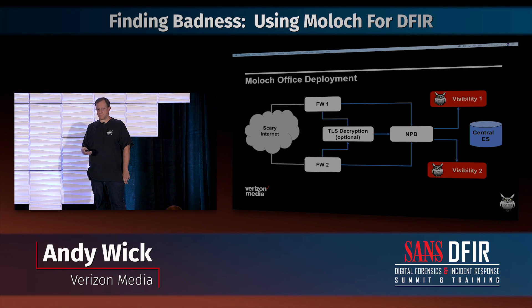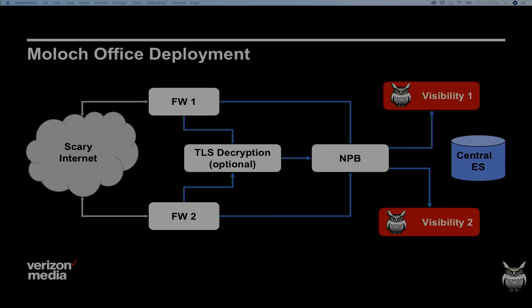Here's an office deployment sample. In a typical office, you probably have an HA pair of firewalls talking to the internet, and you may have some TLS decryption devices. All of those are probably going to have a span port to your NPB, and then your NPB is going to load balance the traffic to your visibility boxes. We like to call them visibility boxes instead of Moloch boxes because we actually run all of our network monitoring tools on these boxes — Suricata, Zeek, NetFlow, whatever. They complement each other: Moloch is going to be using the disk mostly, where Suricata is going to be using the CPU. You're also going to have a centralized Elasticsearch cluster for Moloch metadata for all your offices. We have over 40 offices around the world for Verizon Media forwarding metadata to a central Elasticsearch cluster, while the actual PCAP is stored locally on those visibility boxes.